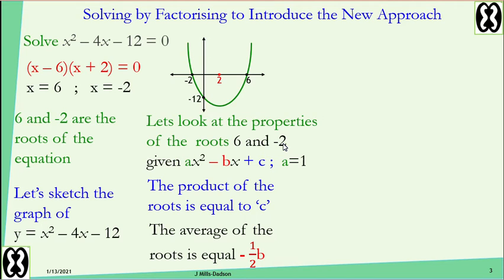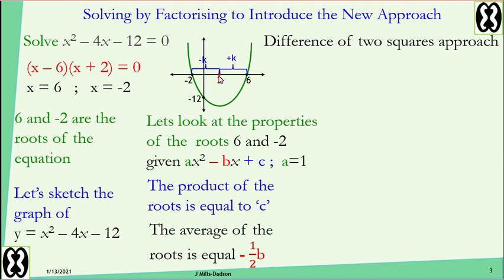Six plus negative two is four, divided by two gives positive two. Negative half of negative four is also positive two — to find negative half of a number, just divide by negative two. This average of two sits right in the middle of negative two and six. This means if I add a number k to the average I get one root, and if I subtract the same k from the average I get the other root.